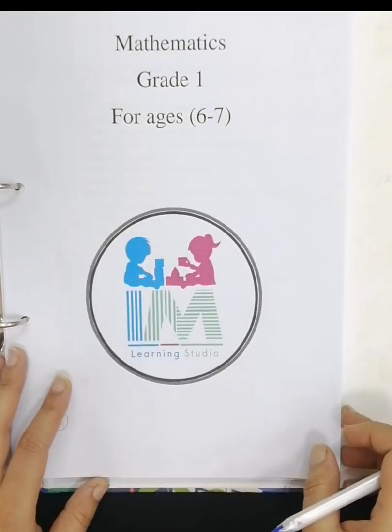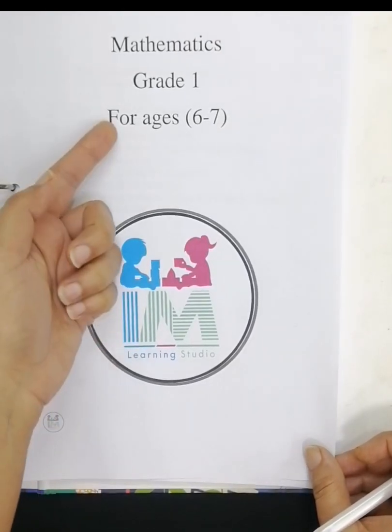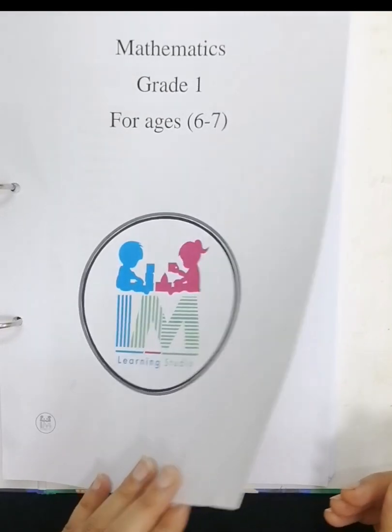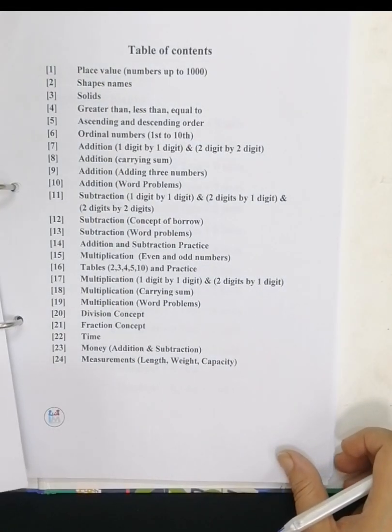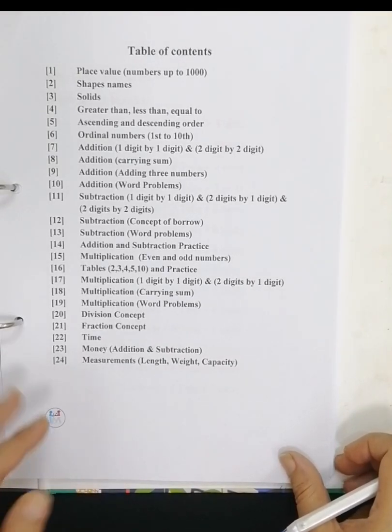Okay, let's start our workbook. This mathematics workbook is for grade one students, ages between six to seven. Let's see the table of contents or the topics which have been covered in this workbook.